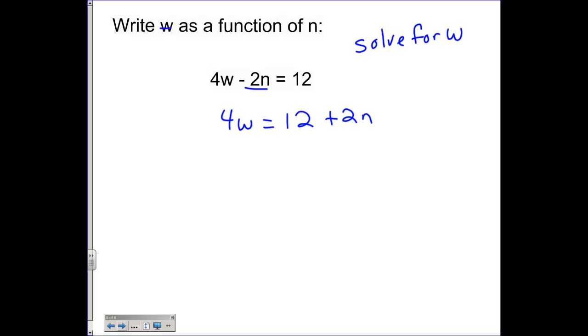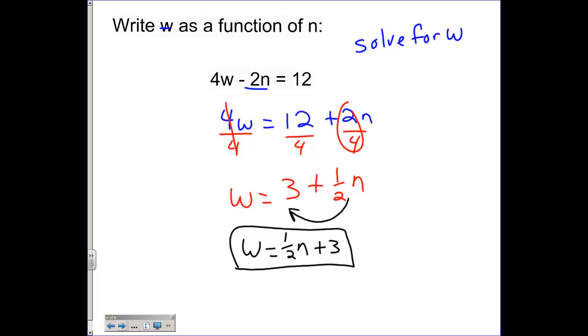And then we're going to divide by 4, divide by 4, and divide by 4. So we have w equal to 3 plus 1 half n. And you could technically leave it like it is, but I'm going to move it up front so that w will equal 1 half n plus 3. So it's more in standard form, where we have the n's up front.